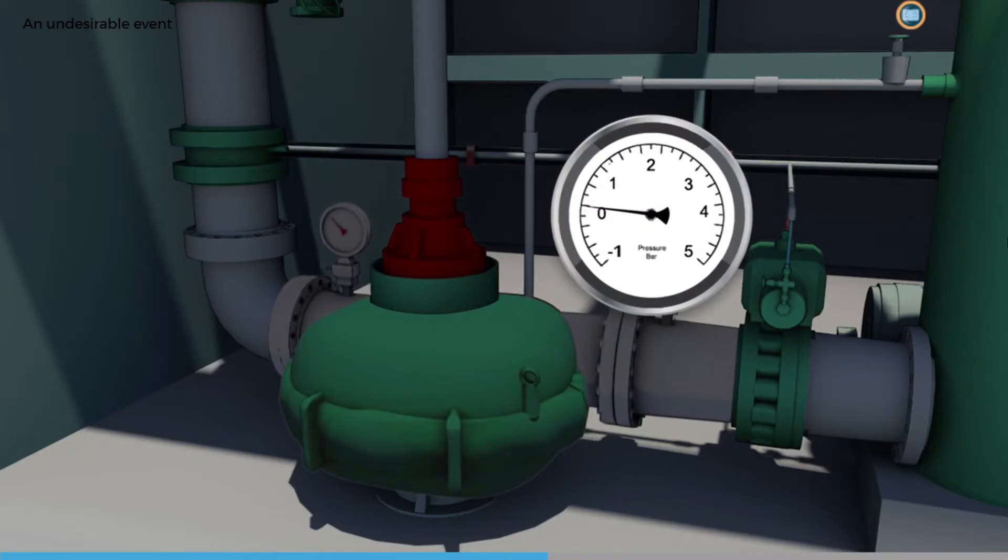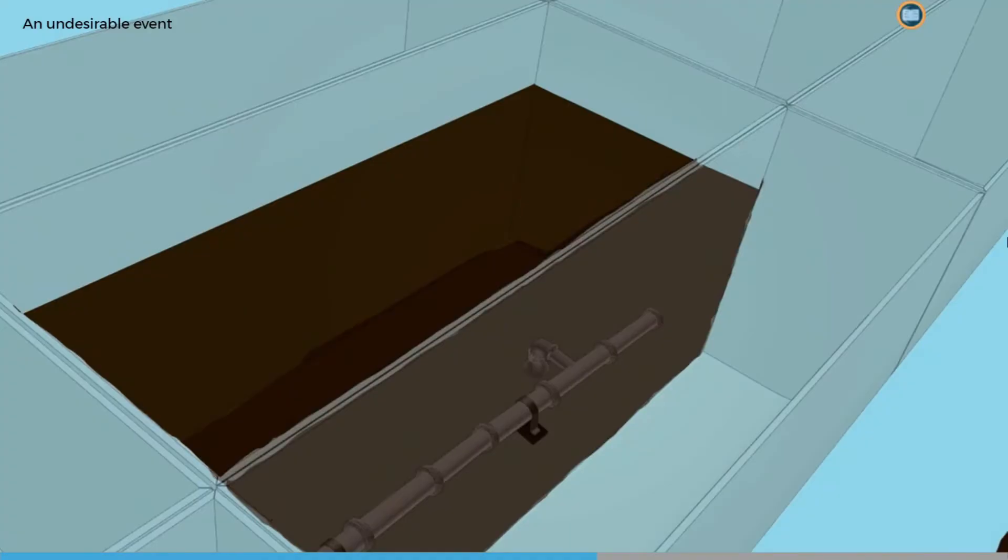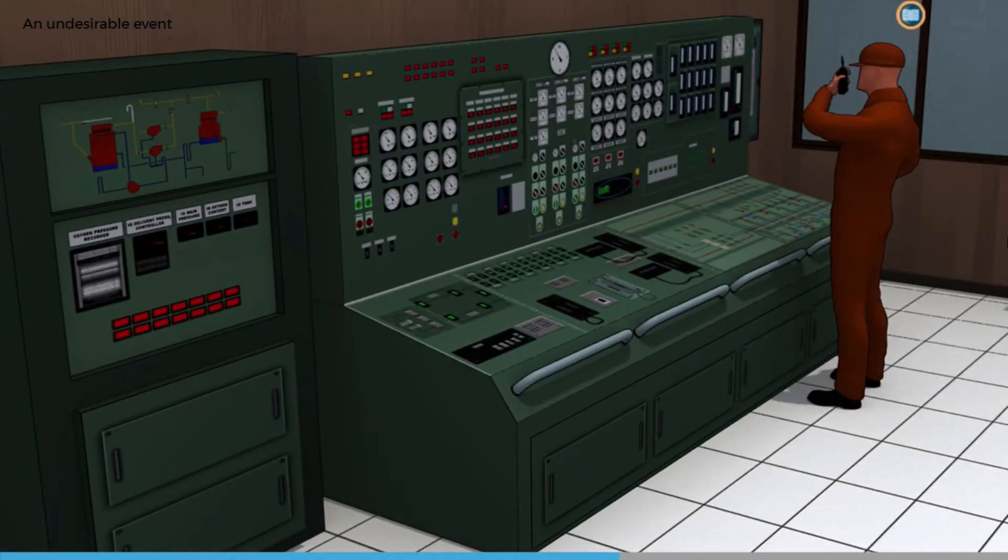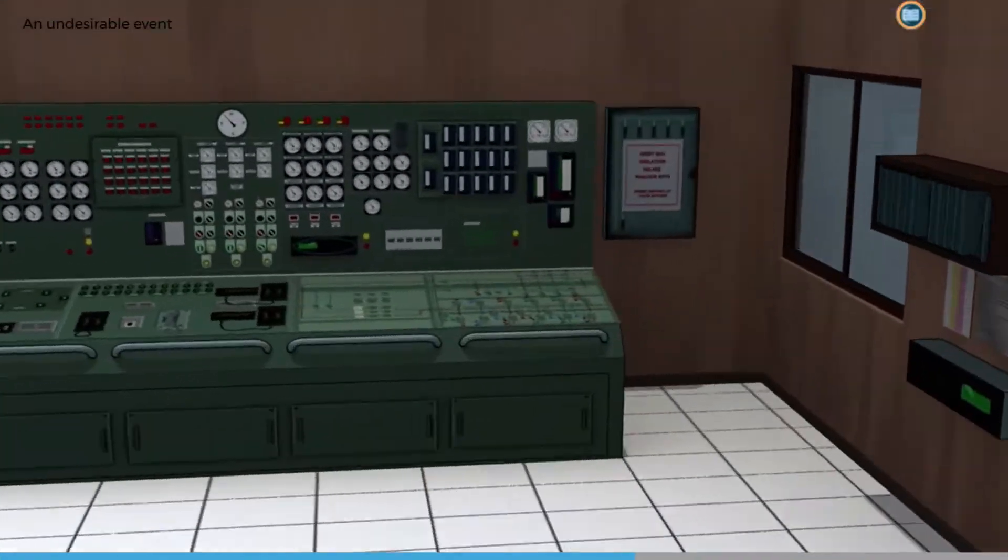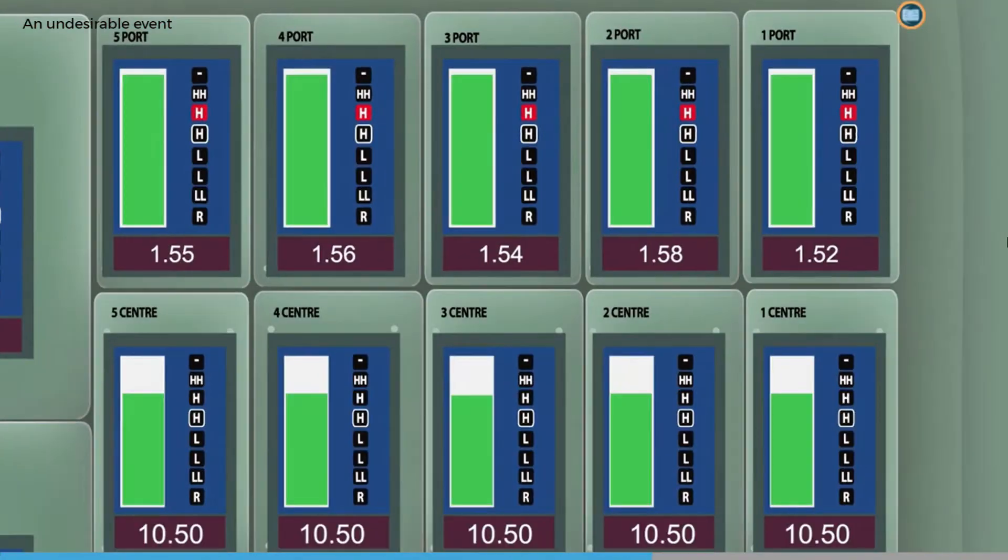More worryingly, on this occasion, the impact had dislodged and weakened a suction pressure gauge pipe on the pump. As the officer in charge knew nothing about this, the rest of the cargo tanks were opened to the pumps and discharge continued with the pumps at full speed.